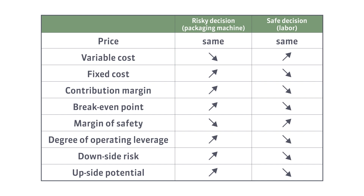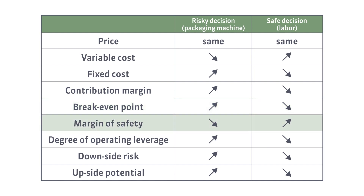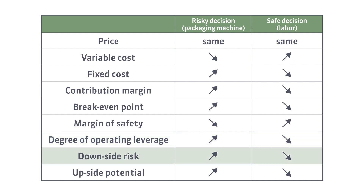Let's summarize the differences between the risky and safe approaches from the point of view of operating leverage. Due to the different cost structure, the contribution margin will also be different. The break-even point will be reached faster in the safe version, so the margin of safety will also be higher for the safe version. However, the risky version will have a higher operating leverage — meaning higher risk when sales decline and greater potential income when sales increase. Be careful: high operating leverage can work against your business.